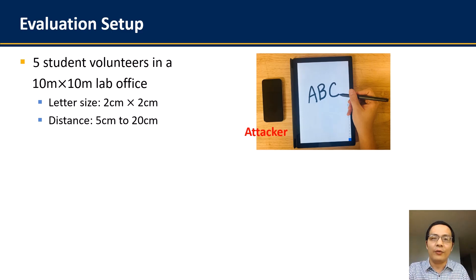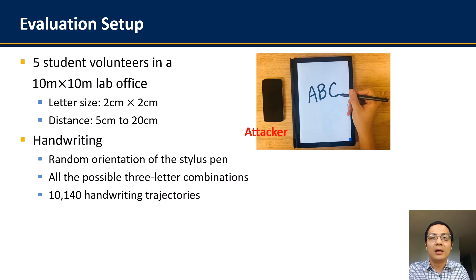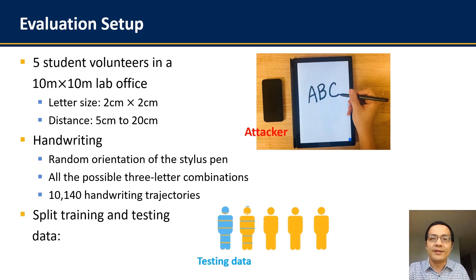So basically, these three components describe how MagHacker works, and let's see how it performs in practice. We evaluated the MagHacker over five student volunteers in the lab office, and in our experiment, each volunteer is handwriting with a stylus pen over the LCD screen of a tablet, and a smartphone running MagHacker is placed aside for eavesdropping. These volunteers are instructed to write all possible three-letter combinations such as ABC, ABD, and etc. In this way, we collected over 10,000 of writing trajectories for evaluation.